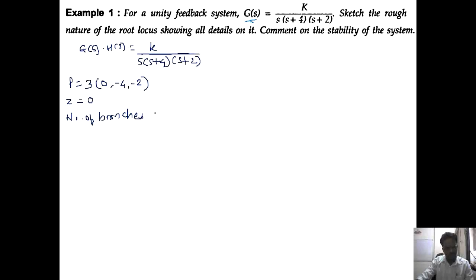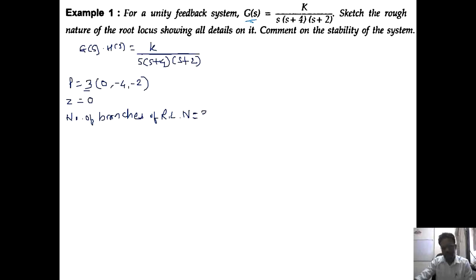Number of branches of root locus, capital N, equals the higher number among poles and zeros. So the higher number is 3, meaning the number of branches is 3.